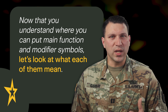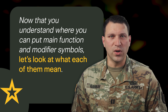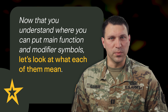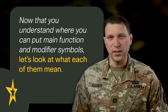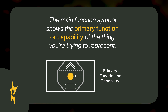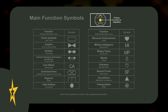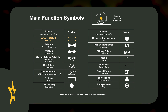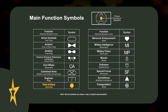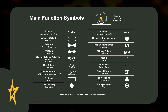Now that you understand where you can put main function and modifier symbols, let's look at what each of them mean. The main function symbol shows the primary function or capability of the thing you're trying to represent. Examples include armor, aviation, or field artillery. Feel free to pause the video here if you want to look over some other examples.